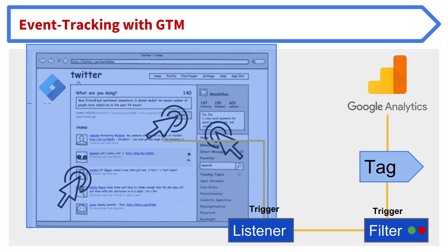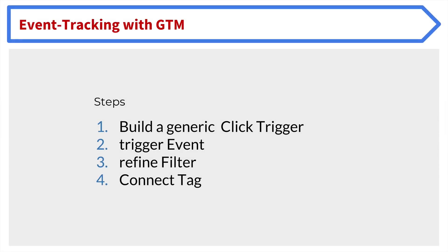It could also be Facebook Analytics or AdWords. So again there are two functionalities: the listener functionality and the filter functionality. Therefore we need to go through steps to ensure that both of those functionalities work. To build effective event tracking we need to: first, build a generic click trigger and try out triggering the event; if it can be listened to, we can then refine our trigger into a specific one only for our element that we want to track; and then connect this all to a tag.